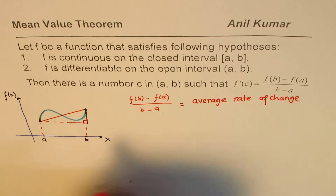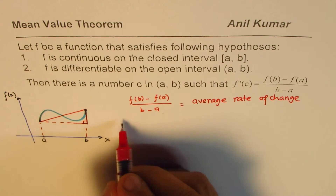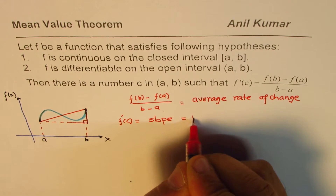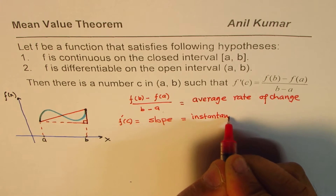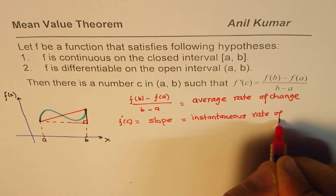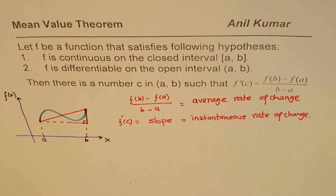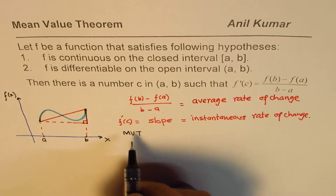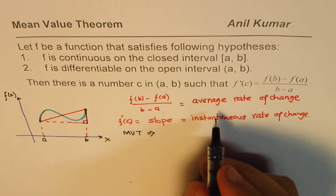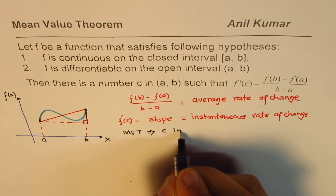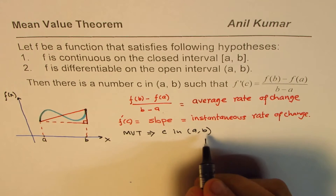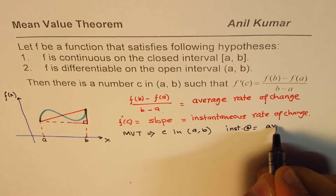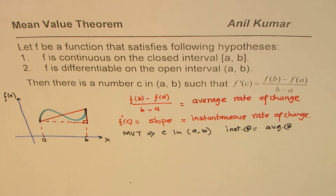That slope represents the average rate of change between the two points. And what is f'(c)? f'(c) is the slope — that is the instantaneous rate of change. So in a way, the Mean Value Theorem, or MVT, links the two: it says there is a point c in the open interval (a, b) where the instantaneous rate of change equals the average rate of change.